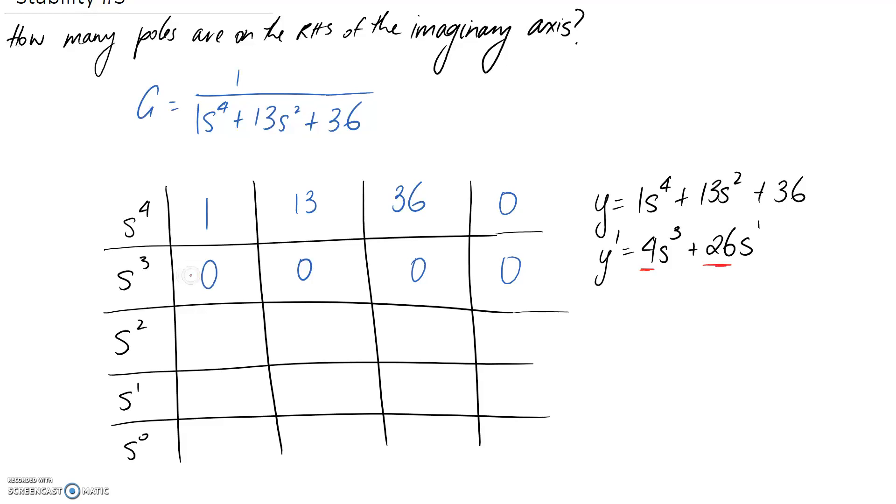So we end up with new coefficients of 4 and 26. And these can be used now in this row to replace the row of 0s. So this is our s cubed term. So we'll cross this out and make it a 4 instead. That's the coefficient. And this is our s to the 1, which represents this box here. So we cross it out and make it 26. And we didn't end up with any of the others, but there would still be zeros all the way across if you needed to fill them in.